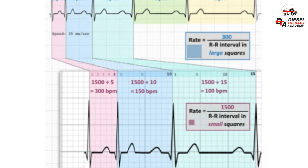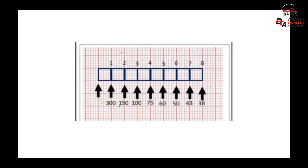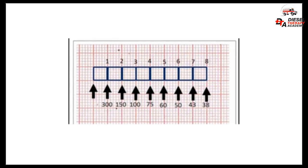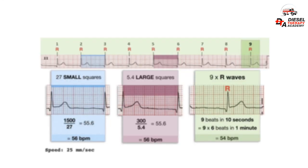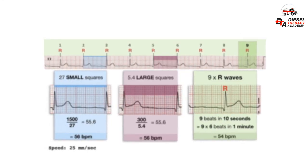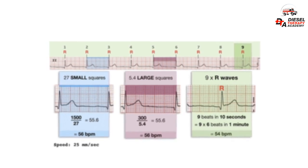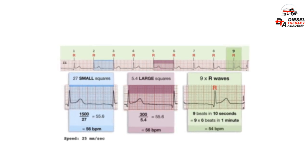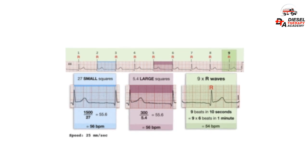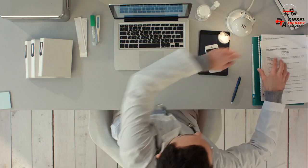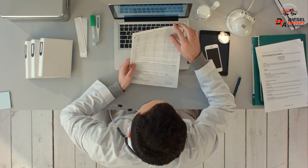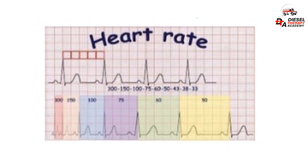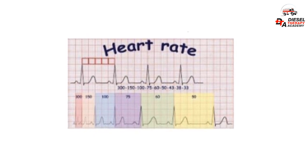The R-to-R interval equals one beat. We can also calculate BPM by dividing 300 by the number of large squares between two R-waves. For regular rhythms, rate equals 300 divided by the number of large squares between consecutive R-waves. For very fast rhythms, rate equals 1,500 divided by the number of small squares between consecutive R-waves. For slow or irregular rhythms, rate equals the number of R-waves times six — count R-waves on the rhythm strip to get the average rate over a ten-second period, then multiply by six to give average beats per minute.